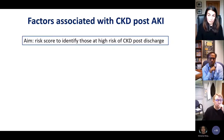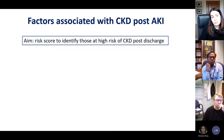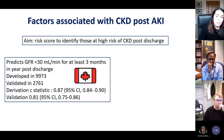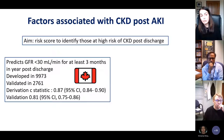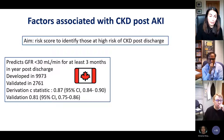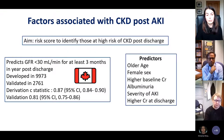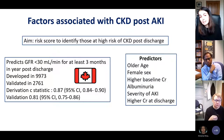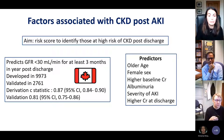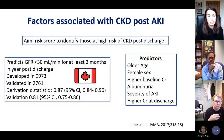Matt James and colleagues looked at factors associated with CKD post-AKI, aiming to develop a risk score to identify those at high risk of CKD after discharge — specifically predicting a GFR of less than 30 ml/min for at least three months in the year post-discharge. Developed in 9,973 patients and validated in 2,761, the C-statistic was 0.87 in the development cohort and 0.81 in validation. Predictive factors were older age, female sex, higher baseline creatinine, albuminuria, severity of AKI, and higher creatinine at discharge — a useful tool to stratify which patients need clinic follow-up.